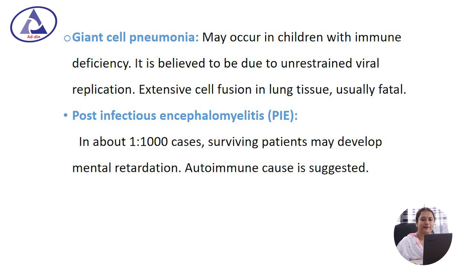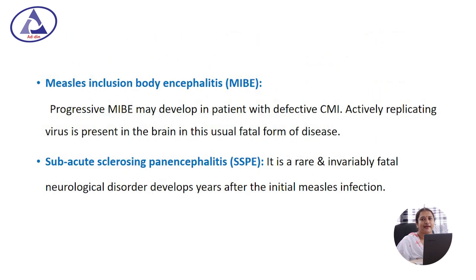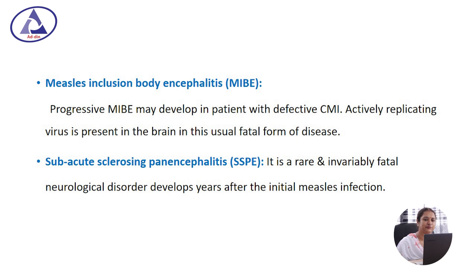Post-infectious encephalomyelitis: in about 1 in 1,000 cases, surviving patients may develop mental retardation. An autoimmune cause is suggested. Measles inclusion body encephalitis is another form; progressive measles inclusion body encephalomyelitis may develop in patients with defective cell-mediated immunity.